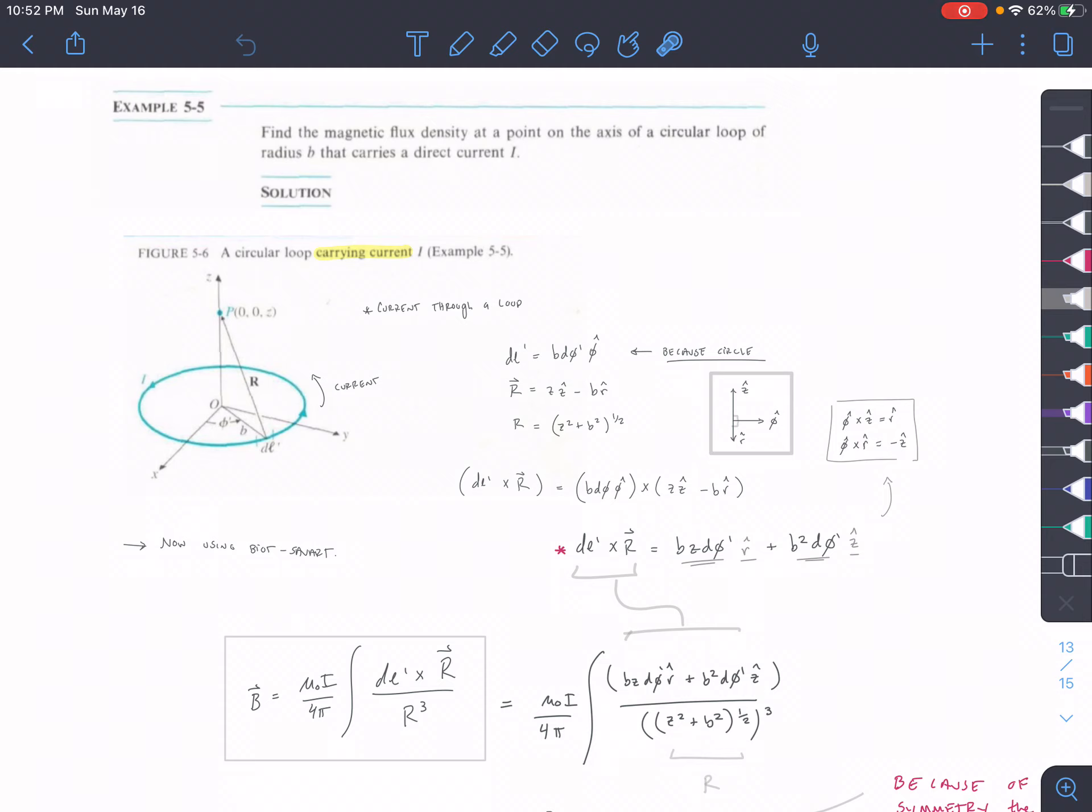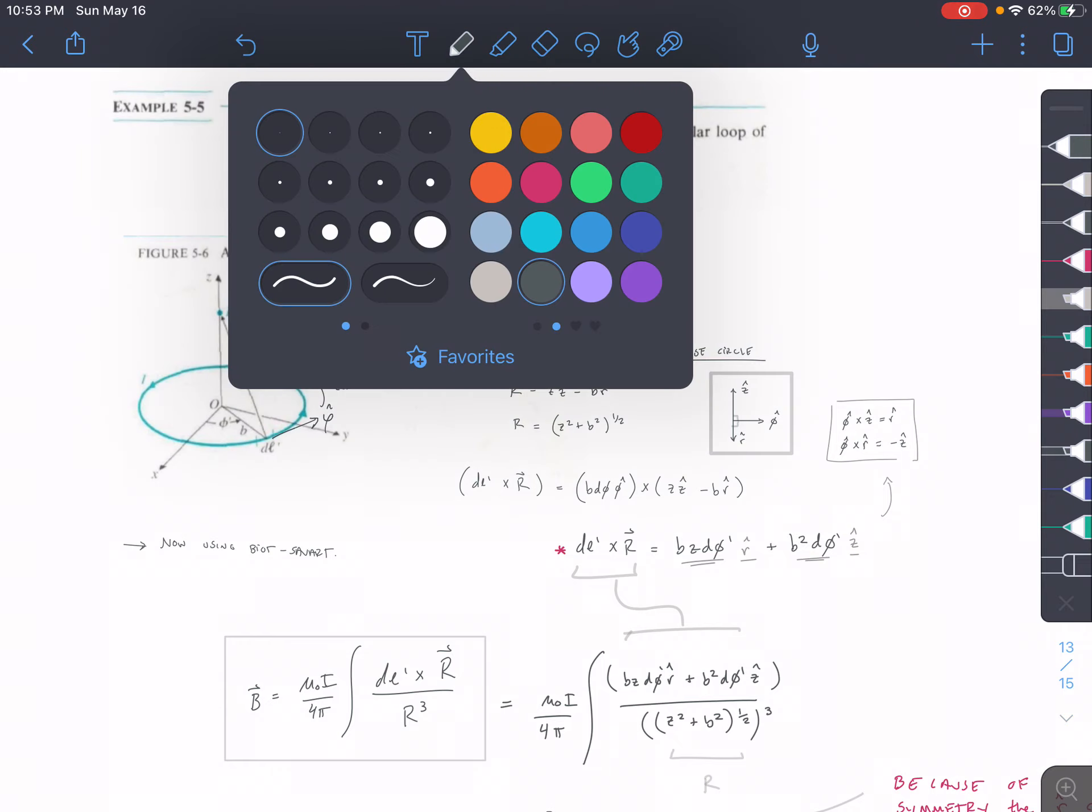And then for our dL, dL is along the current direction, so we have B d-phi. So we have a radius times d-phi to give ourselves the arc length of the total circle, and it is going in the phi-hat direction, which means that it's just rotating around.